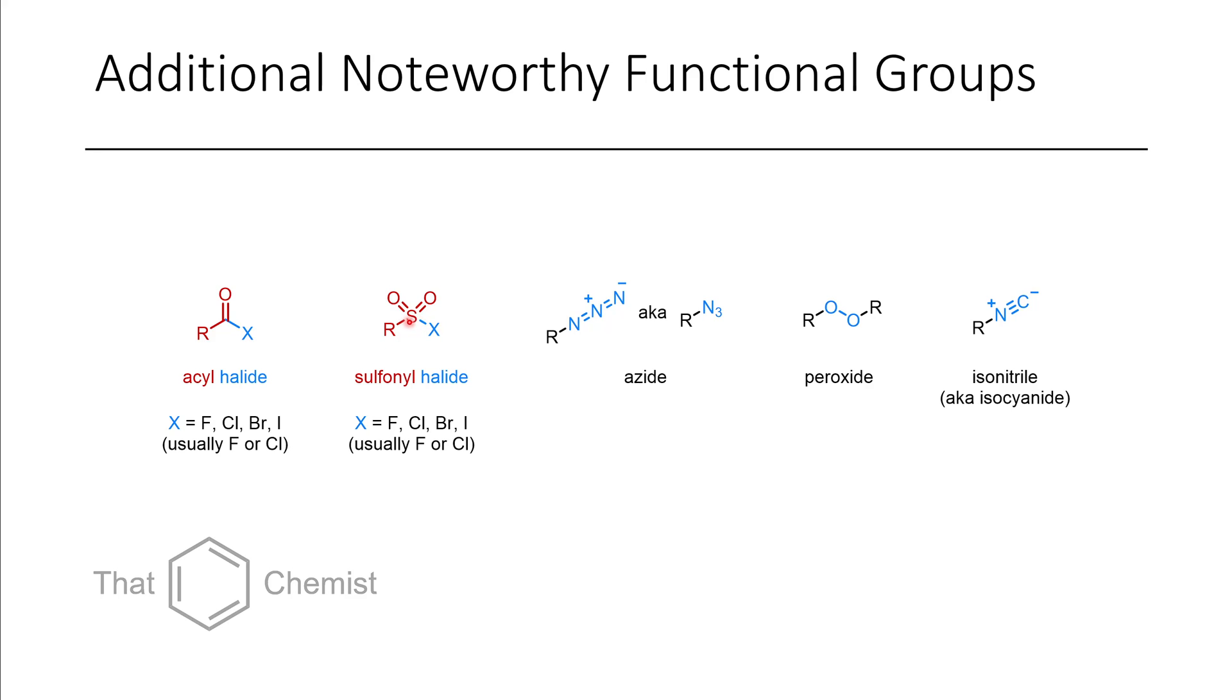Now, if you haven't realized by now, sulfonyls are a lot like carbonyls, or a sulfonyl versus an acyl group. And so, if we just have the exact same thing, but with a sulfur and two oxygens instead of a carbon with one oxygen, and then we have a halogen, that would be a sulfonyl halide. These are both very common reagents in organic synthesis, as you'll see later in this course.